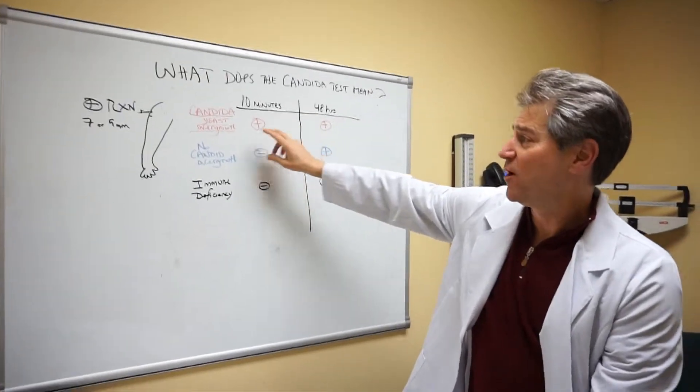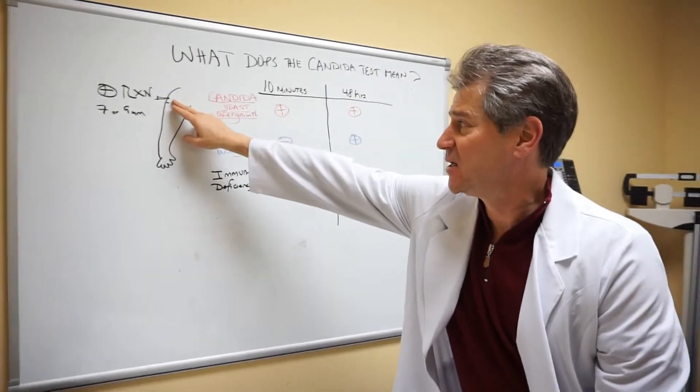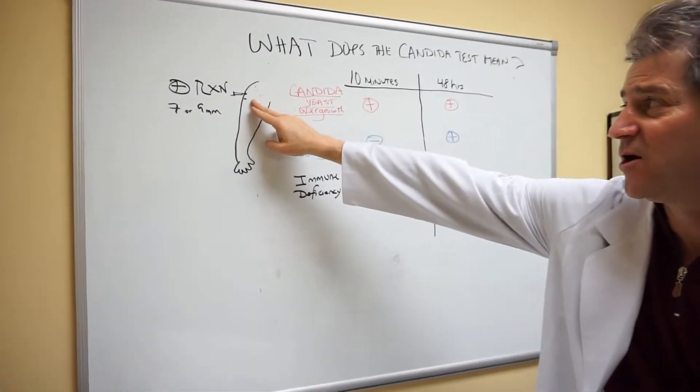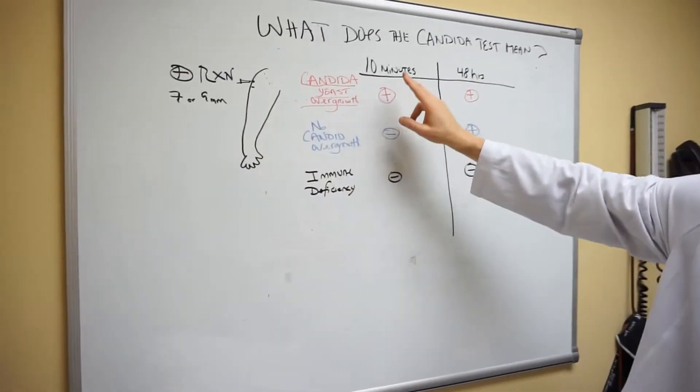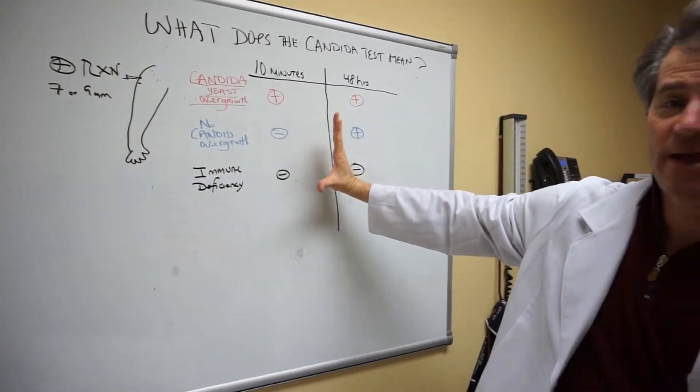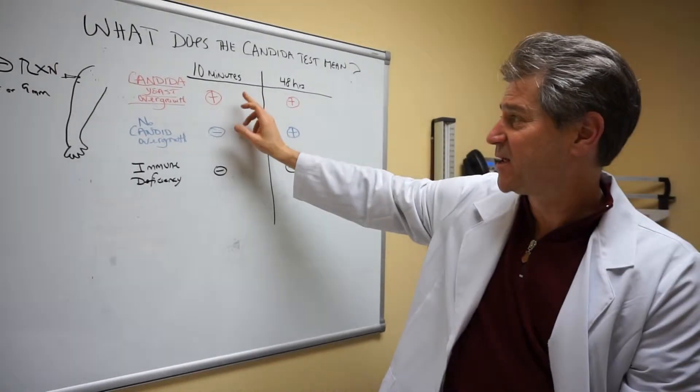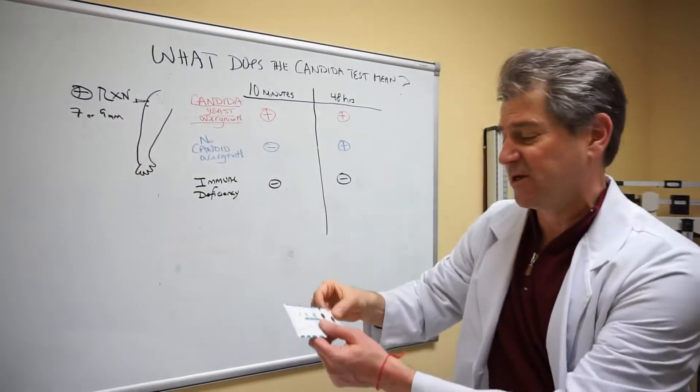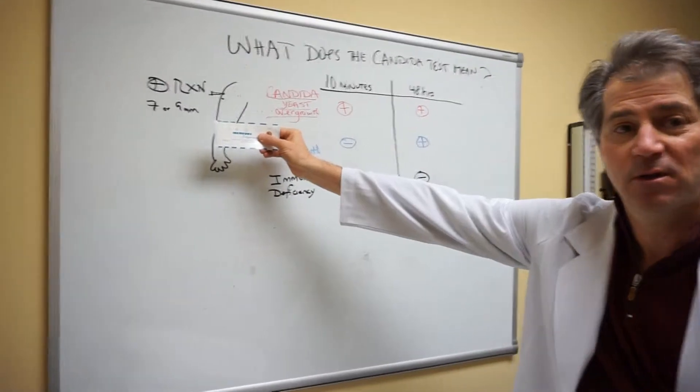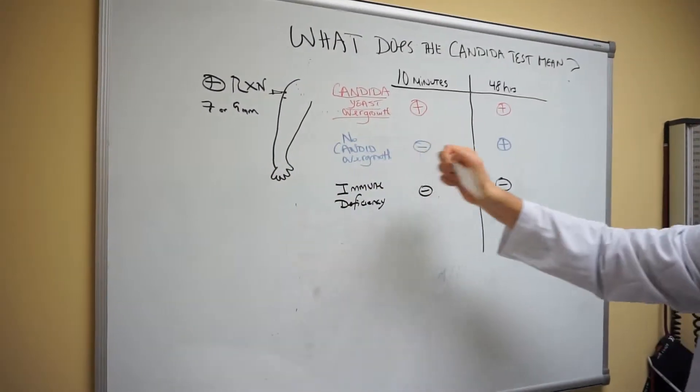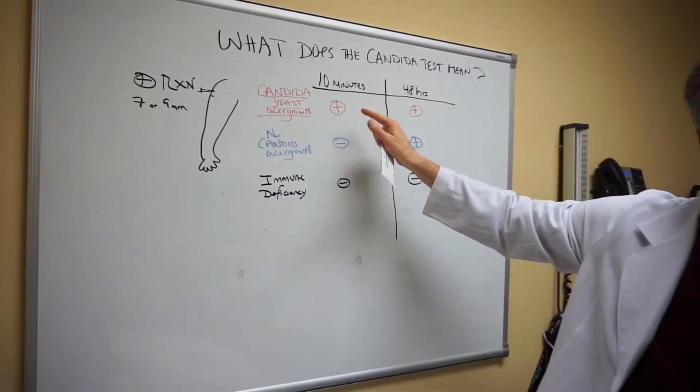What I see in the office after we've introduced the candida and something called trichophyton under the skin is we wait 10 minutes to see if there's a reaction. If within 10 minutes there's a reaction of 7 to 9 millimeters, which we measure, that indicates candida overgrowth.